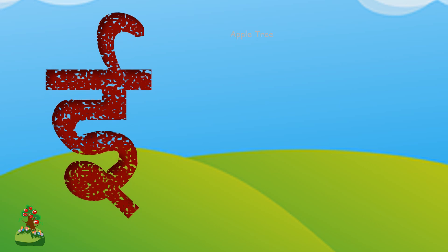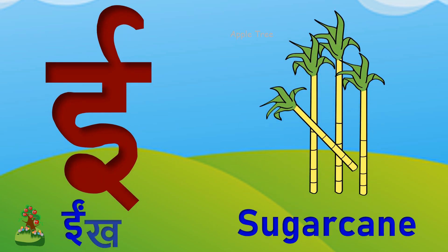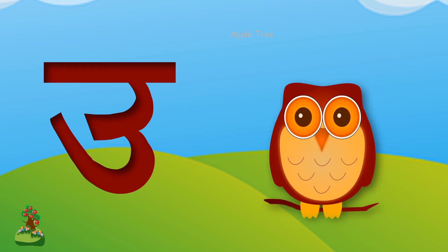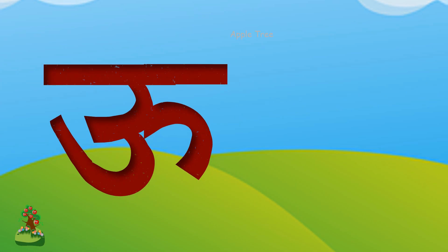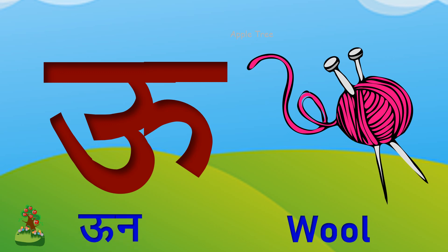बड़ी ए, बड़ी ए से एक। छोटा उ, छोटा उ से उल्लू। बड़ा उ, बड़ा उ से ऊन।